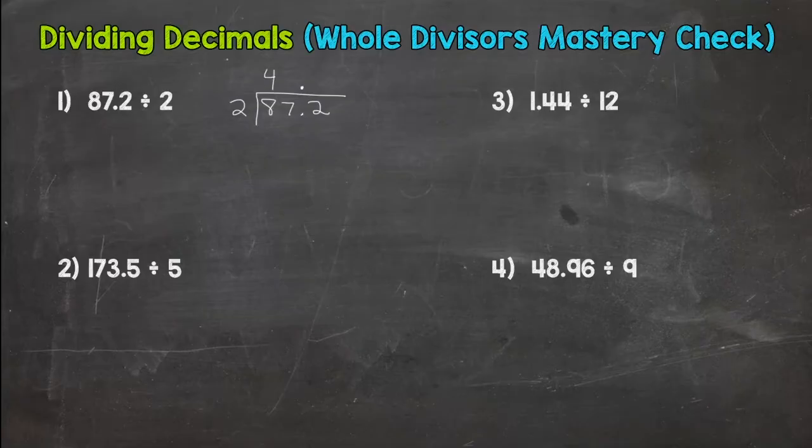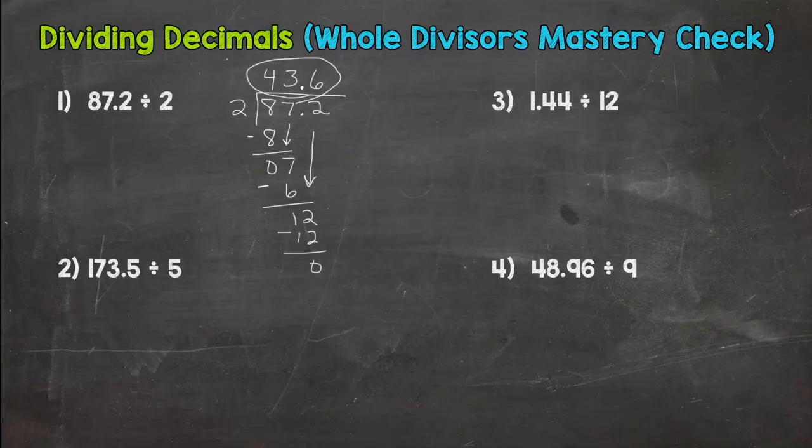Eight divided by two is four. Multiply, get a zero, bring down. How many groups of two out of seven? That is three. Three times two is six. Subtract, we get one. Bring down that two. And then we wrap it up with twelve divided by two, or how many whole groups of two can we pull out of twelve? Six. Six times two is twelve. Subtract. Nice clean cut zero there. Forty-three and six tenths for number one.